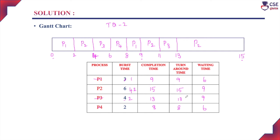Next, we find the average turnaround time and the average waiting time. Average turnaround time is the sum of turnaround times of all processes divided by the number of processes. The sum of turnaround times is 45 and the number of processes is 4, giving 11.25 ms. Average waiting time is the sum of waiting times divided by the number of processes. The sum of waiting times is 30 divided by 4, giving 7.5 ms. So the average waiting time is 7.5 ms and the average turnaround time is 11.25 ms. This is how we solve the Round-Robin scheduling algorithm.